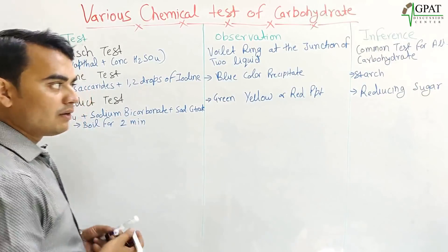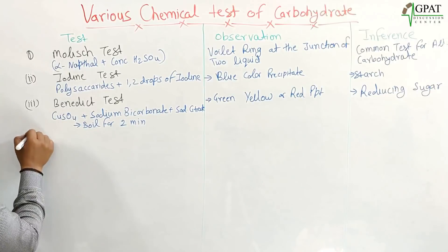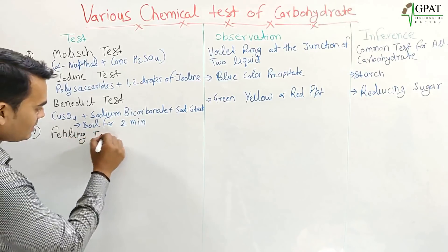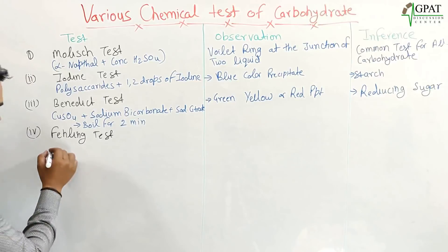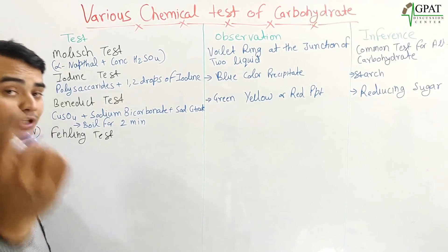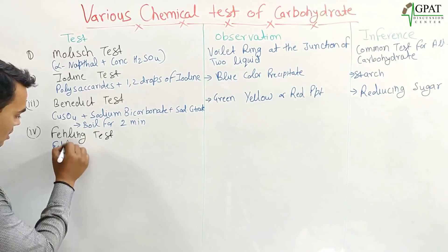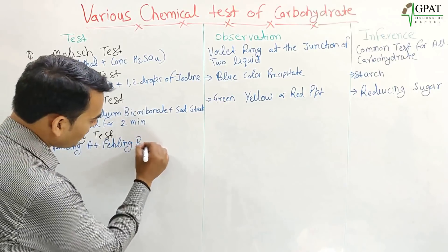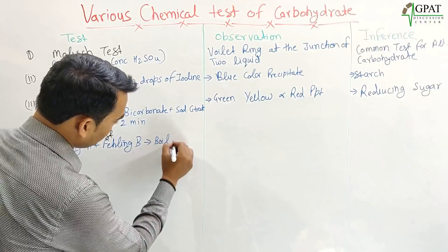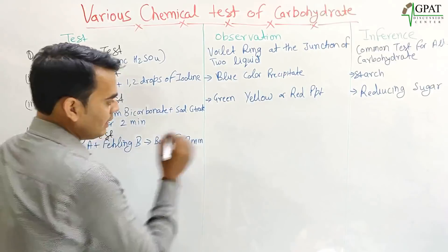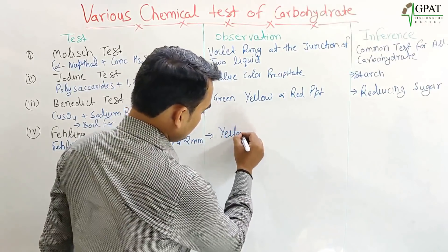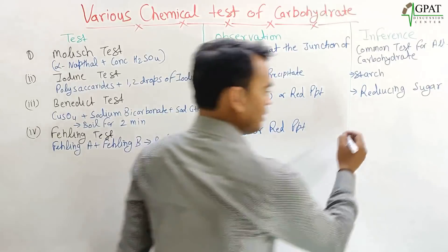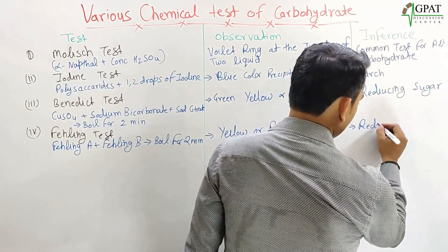There is also another test for identification of reducing sugars — the Fehling test. We take Fehling solution A and Fehling solution B, mix them, and boil for two minutes. If a yellow or red precipitate forms, it confirms this is a reducing sugar.